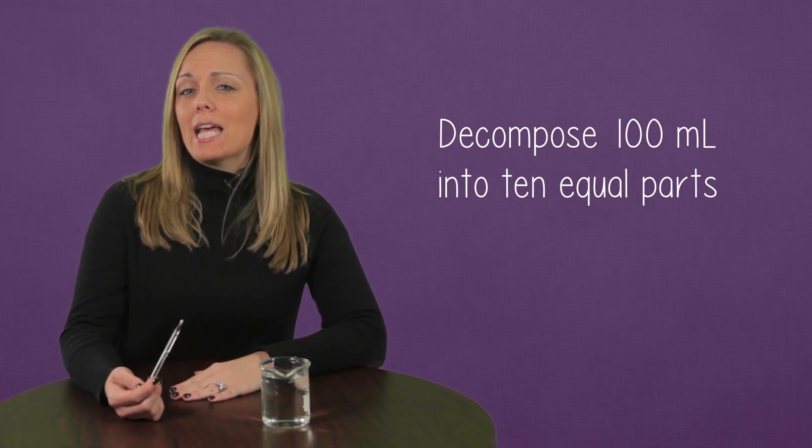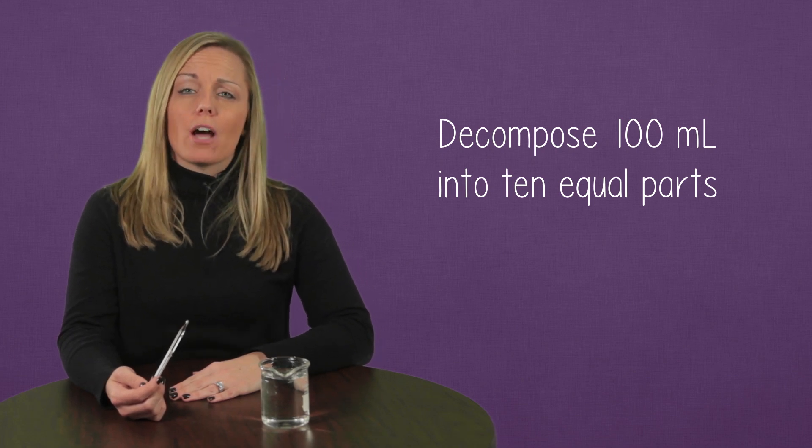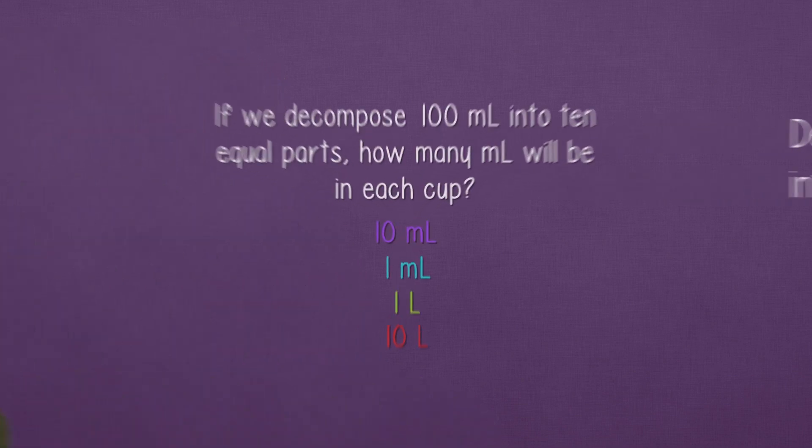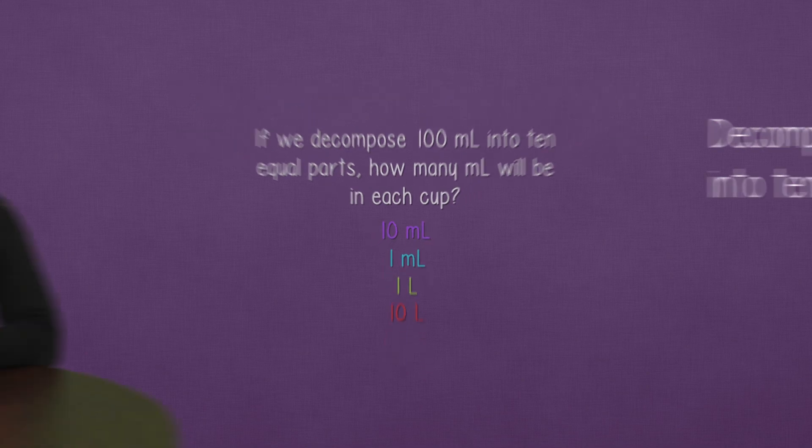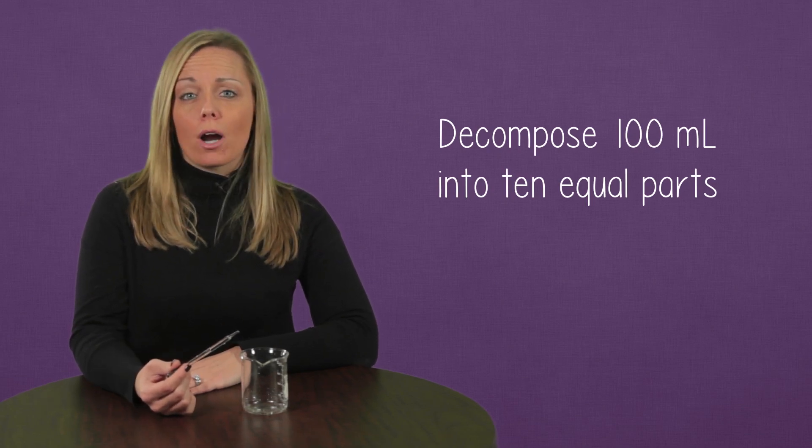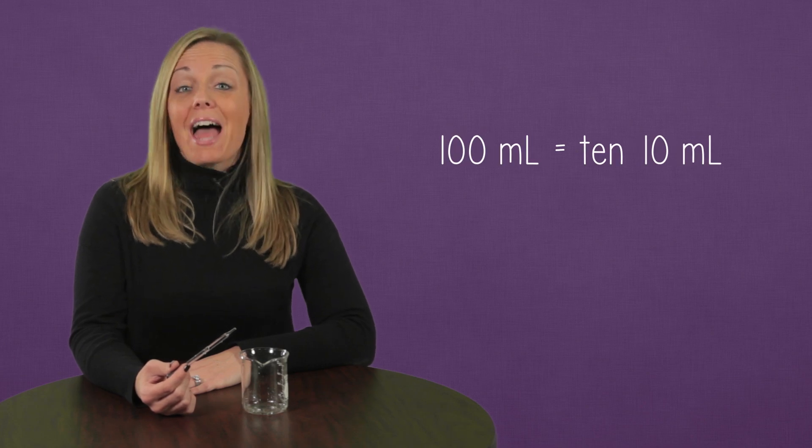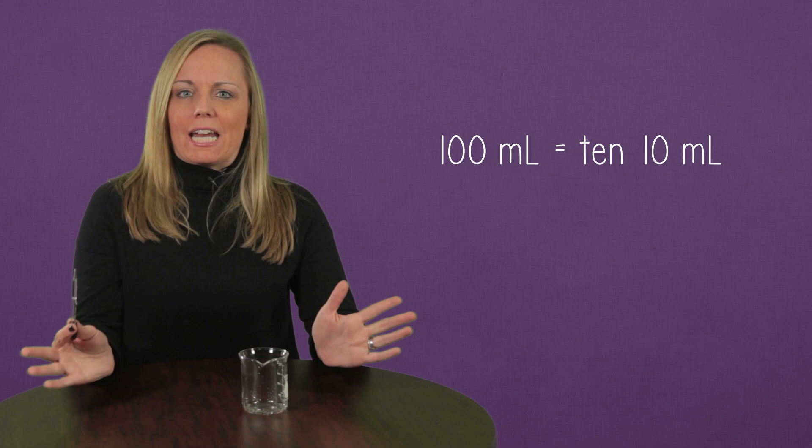Let's split this into 10 equal parts. How much liquid will be in each of the 10 parts? If we decompose 100 milliliters into 10 parts, each will have 10 milliliters. That's 100 divided by 10. That's great, and way faster than using this eyedropper.